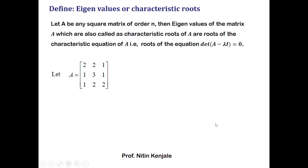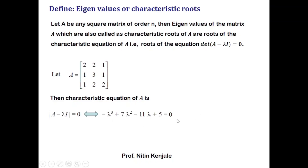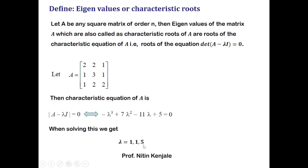Consider the previous example where A is this matrix and the characteristic equation of A was given. When you solve this equation, the roots of this equation will be known as eigenvalues of matrix A. On solving this equation we get lambda equal to 1, 1, and 5. These three are the eigenvalues of this matrix A.